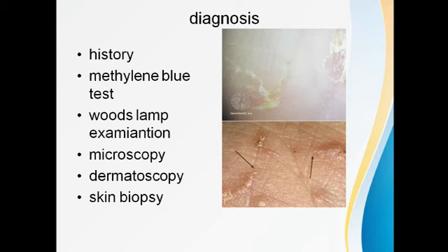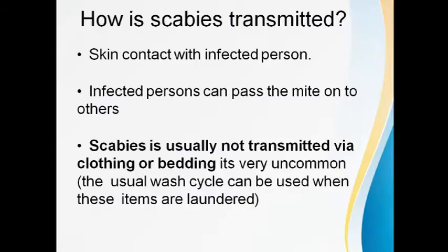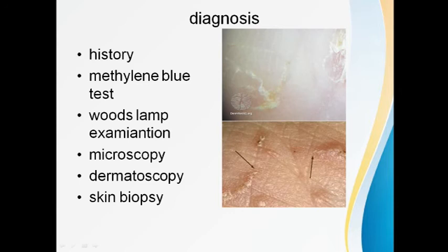Another bedside test is the Wood's lamp examination: apply tetracycline ointment over the finger folds and wash it off. Tetracycline has a yellowish fluorescence under Wood's lamp at 365 nm UV, so fluorescence along the burrow tract is visible since tetracycline remains inside the tract. Direct microscopy is a definitive diagnostic method — we can visualize the mite burrowing into the epidermis. A scraping from the burrows is mounted on an oil-mount slide and examined under high-power microscope.